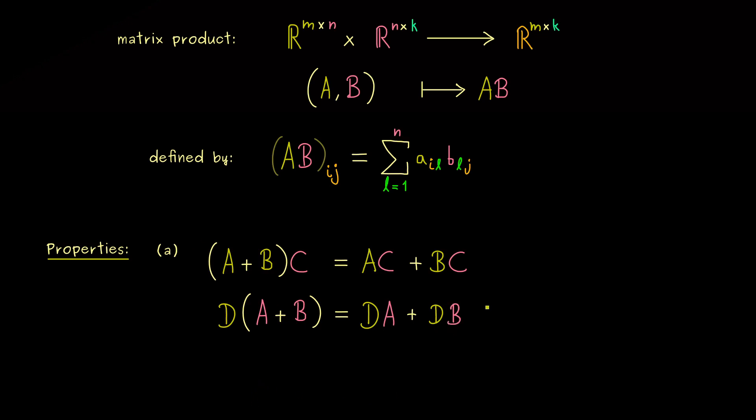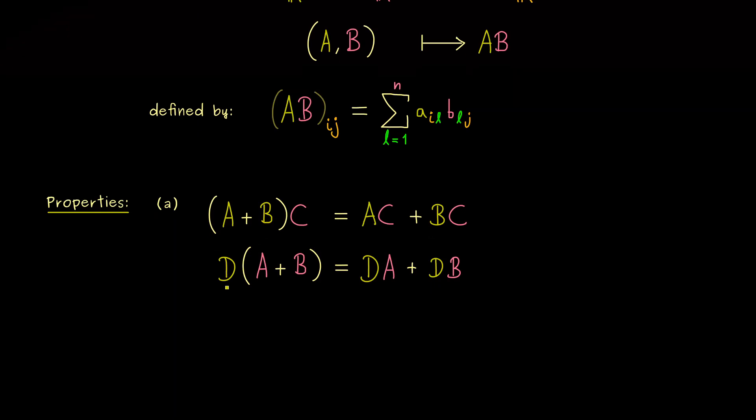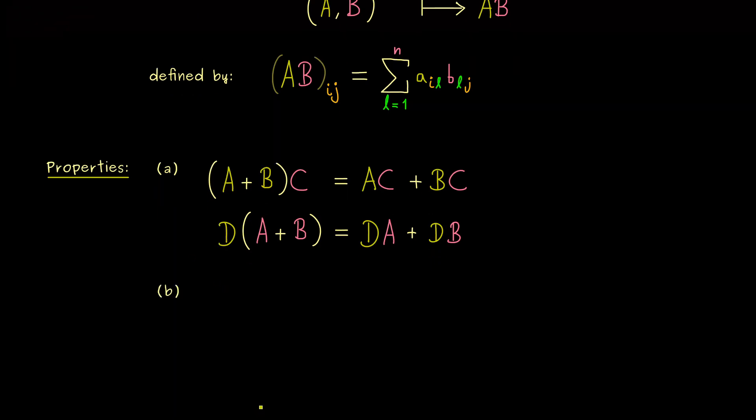Now at this point you might remember that we also discussed distributive laws when we talked about the matrix addition in part 11. However, there we didn't talk about the matrix product but rather about the scalar multiplication. Hence, now you see we have two multiplications concerning matrices.